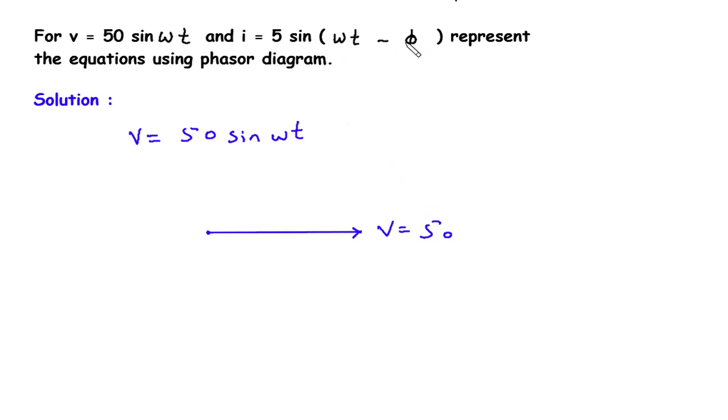the angle is negative, that means it will be downside, so this will be like this and it will be 5 ampere.